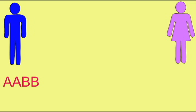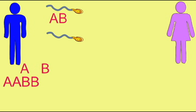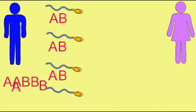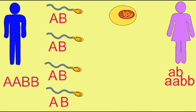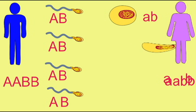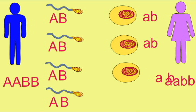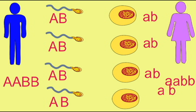If an individual is homozygous for two separate genes, in this case indicated with the letters A and B, then they will only produce one type of gamete. An individual who is homozygous dominant for two genes can only produce gametes with the dominant alleles for A and B. In contrast, an individual who is homozygous recessive for these two genes can only produce one type of gamete with the recessive alleles for each of these two genes.